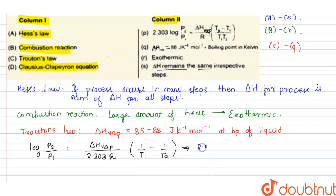the equation will be 2.303 log of P2 upon P1, which is equal to Delta H_vap upon R, T2 minus T1 upon T1 T2. Therefore D matches with P. Thank you.